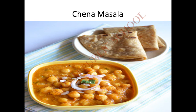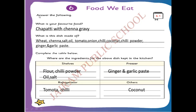See, I am going to write for my favorite food - chapati with chenna gravy. For making chapati, you are going to write the ingredients as: wheat flour, chenna, salt, oil, tomato, onion, chili, coconut, chili powder, ginger garlic paste. These are all the ingredients we are going to use to make chenna gravy.